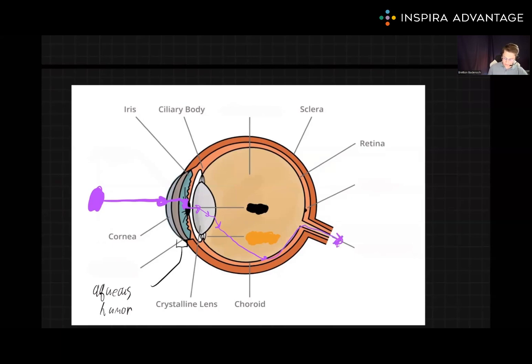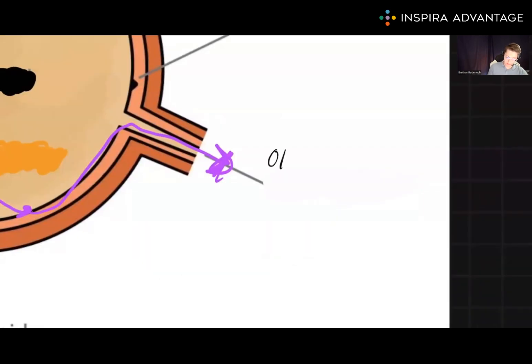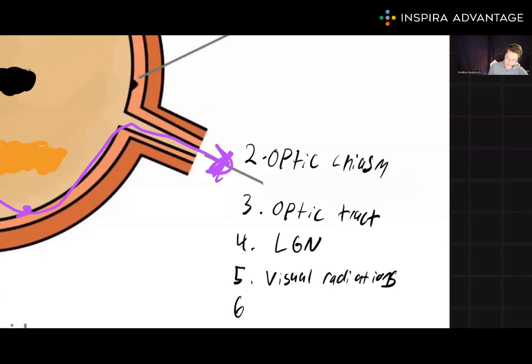After the optic nerve, it will pass through the optic chiasm, then the optic tract, then the lateral geniculate nucleus or LGN, then the visual radiations, and finally to the visual cortex in the occipital lobe.